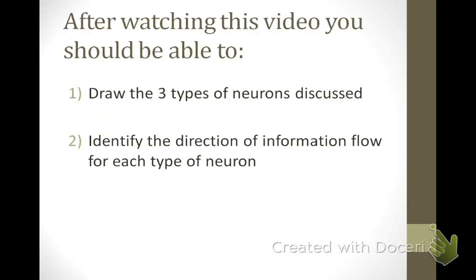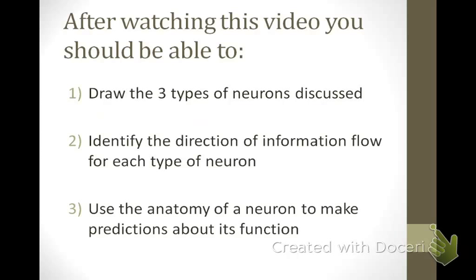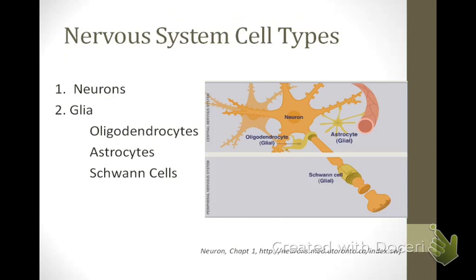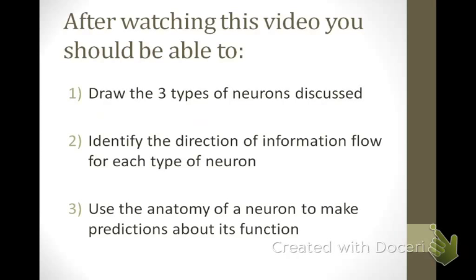1. Draw the three types of neurons discussed. 2. Identify the direction of information flow for each type of neuron. And 3. Use the anatomy of a neuron to make predictions about its function.